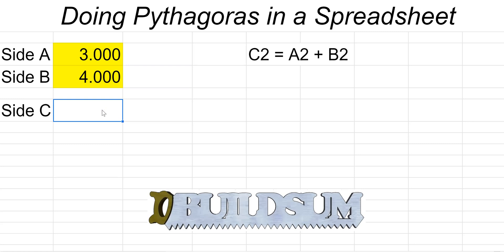As usual we go down to where we want the answer and we're always going to start our formula with the equals symbol. Then the first function we're going to do is the square root function, so to get that up the abbreviation is SQRT. You get square root.